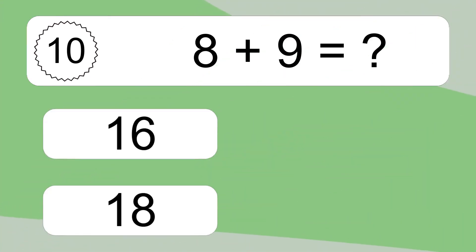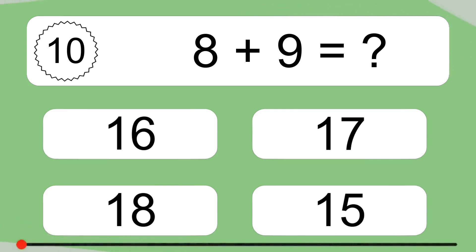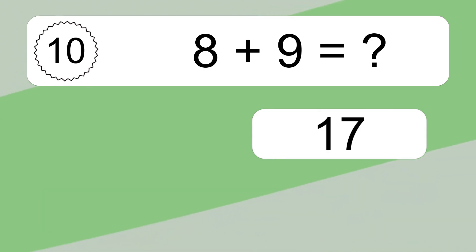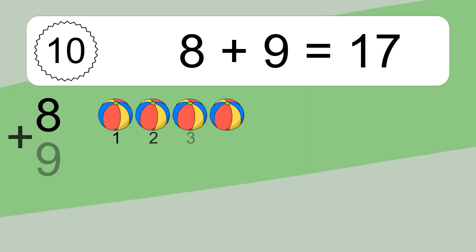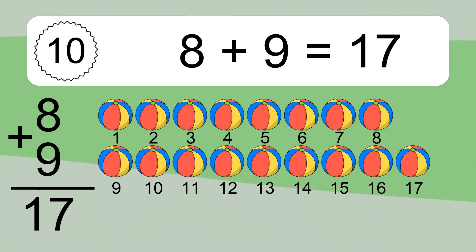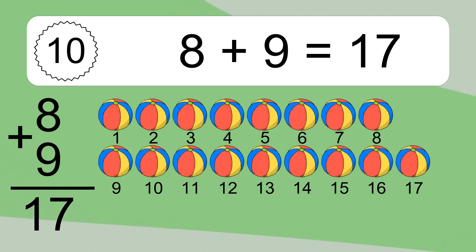8 plus 9 equals what? 8 plus 9 equals 17. Let's count it: 1, 2, 3, 4, 5, 6, 7, 8, 9, 10, 11, 12, 13, 14, 15, 16, 17.